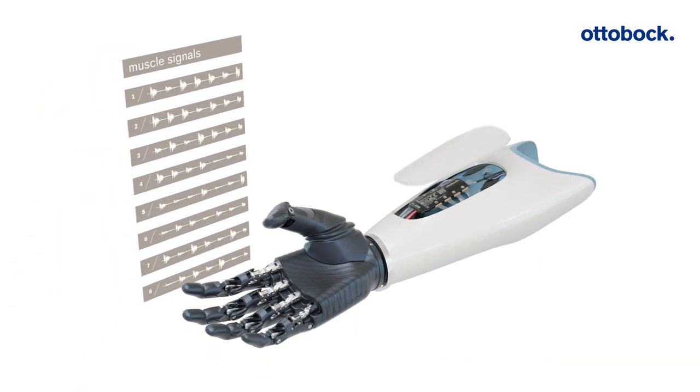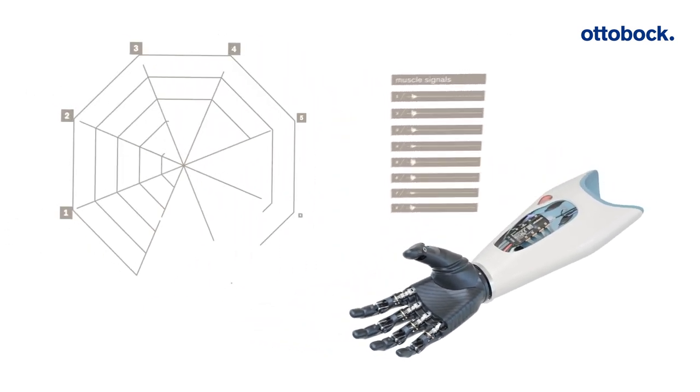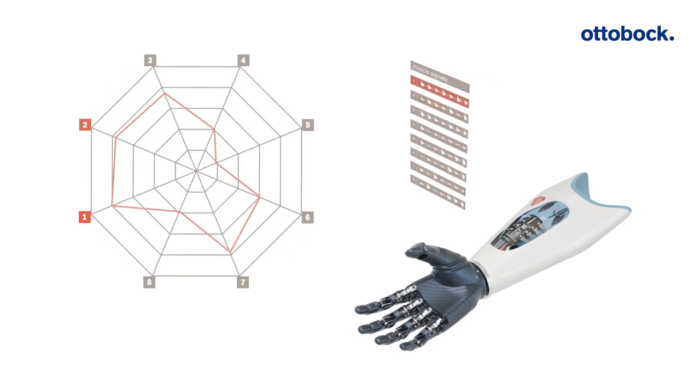Complex mathematical algorithms transform and amplify these signals and patterns so that a prosthetic hand can translate them into the corresponding movement.